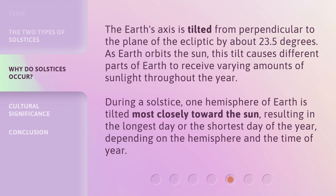The Earth's axis is tilted from perpendicular to the plane of the ecliptic by about 23.5 degrees. As Earth orbits the sun, this tilt causes different parts of Earth to receive varying amounts of sunlight throughout the year. During a solstice, one hemisphere of Earth is tilted most closely toward the sun, resulting in the longest day or the shortest day of the year, depending on the hemisphere and the time of year.